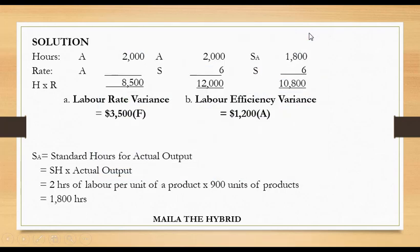For the labor efficiency variance, subtracting $12,000 minus $10,800, you obtain $1,200. The variance is adverse. Actual hours were 2,000, but standard hours for actual output were 1,800. We expected to use 1,800 hours but ended up using 200 more hours — that's adverse because we had to pay labor for those extra hours.